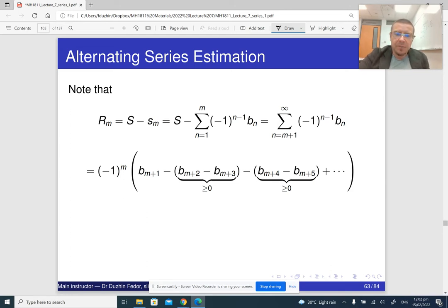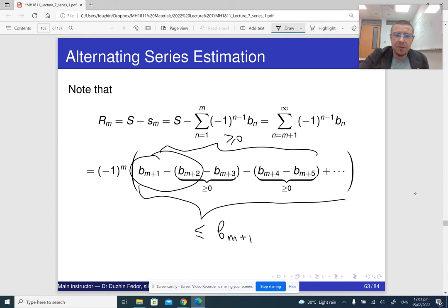Basically, if you express the error in terms of the elements of the series, you will get this expression. Notice that b_{m+2} minus b_{m+3} is non-negative, b_{m+4} minus b_{m+5} is non-negative, and so on. Which means that this whole thing is b_{m+1}, and we subtract some things from it, so this whole thing is going to be less than b_{m+1}. At the same time, this whole thing is still going to be positive, or non-negative. It's because this is positive, this is positive, and so on. So this whole thing is somewhere between 0 and b_{m+1}.